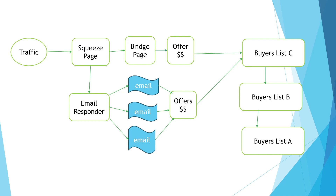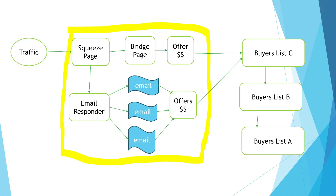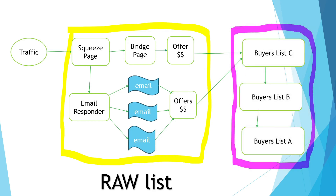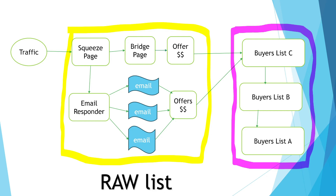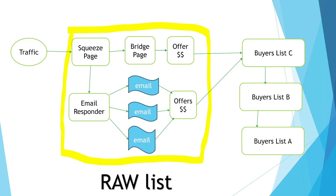Let's break it down even further. This part of the system is called the raw list. The raw list is purely there to collect emails. From this raw list, we want to collect buyers. So whoever buys from this section of the system will go into the buyers list, and it's the buyers list that will make the money.